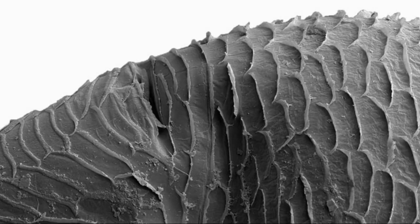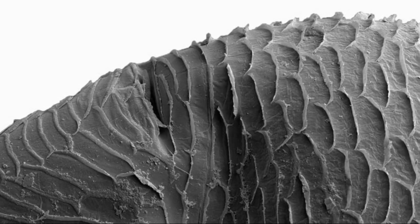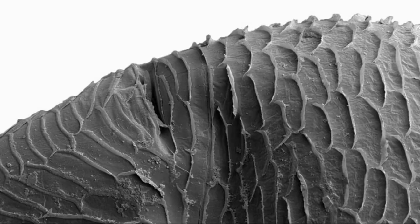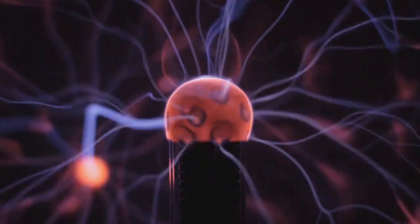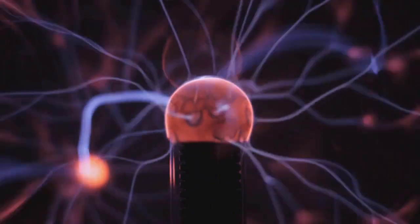To further unravel the complexities of conductivity, we delve into the microscopic world of electrons within materials. The free electron gas model envisioned electrons in a metal as a gas of non-interacting particles moving freely. While this model explains some metallic properties, it failed for semiconductors and insulators.